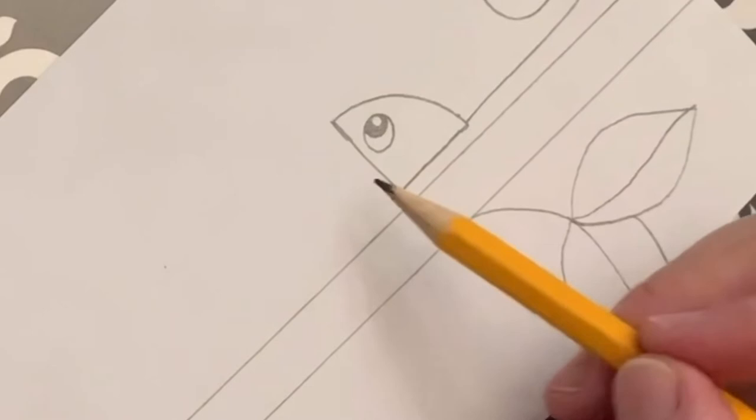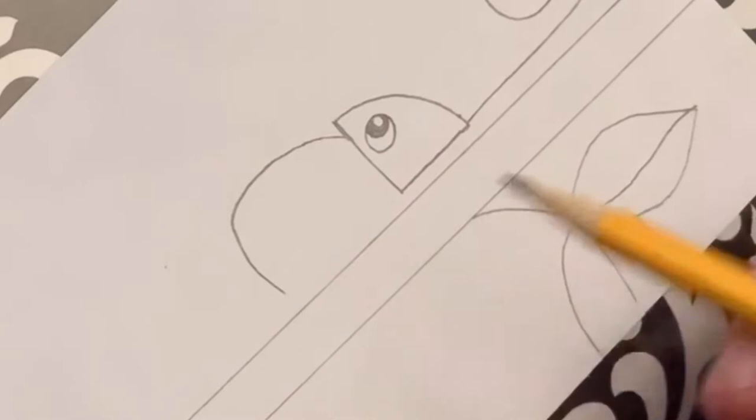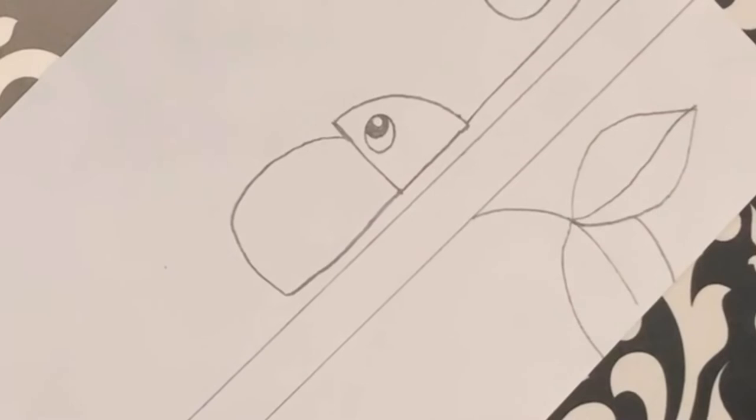Next, we're going to draw the body. So for the body, we're going to make the same curve shape. It's going to look like a half rainbow. We're going to make half curve down, and then we're going to bring that line to the head. So we've got a head and a body.